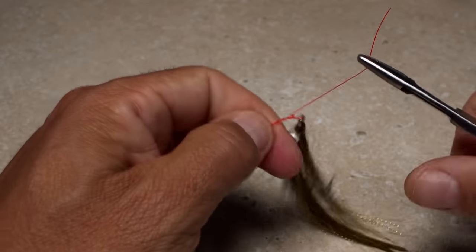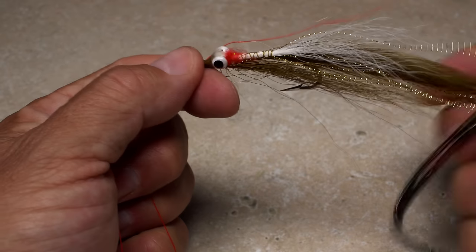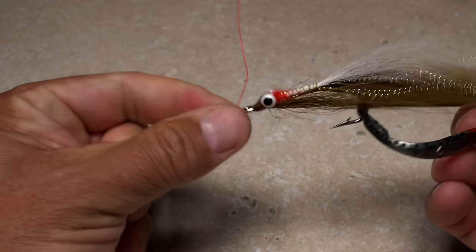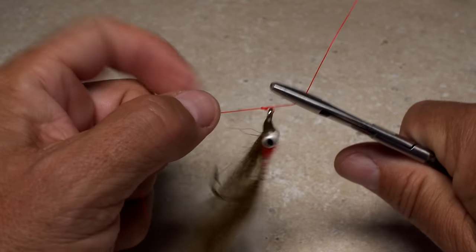You can use the jaws of the mitten clamp to help you do this. To further seat the knot, close the clamp and use the handles to continue pulling the knot tight. Another little pull on the tag will close the knot still further.